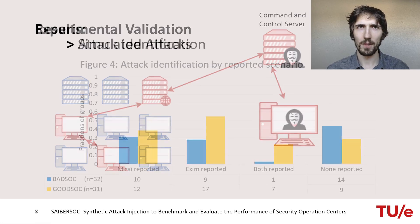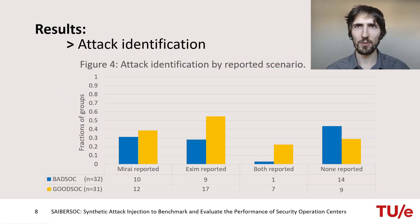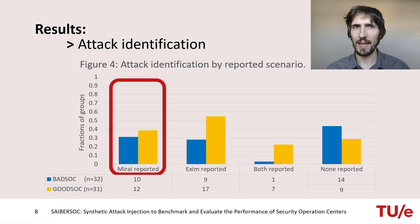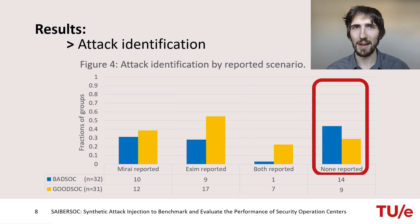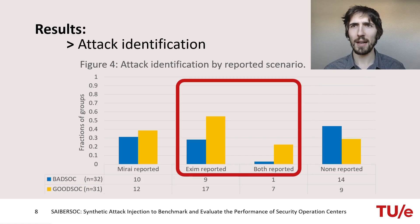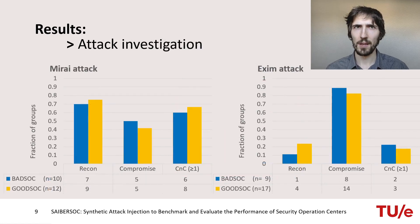Now let's switch to the results of our experiment. This graph summarizes the differences between bad SOC in blue and good SOC in orange with respect to the attack identification phase. Attack identification means that students spotted an alert and mentioned it in their report. The graph shows the fraction of groups that reported the Mirai attack, the Exim attack, both attacks together, and the number of groups that did not mention any of the two attacks. The groups operating on good SOC in orange were more likely to identify the Exim attack and both attacks — in fact, the differences here are significant.